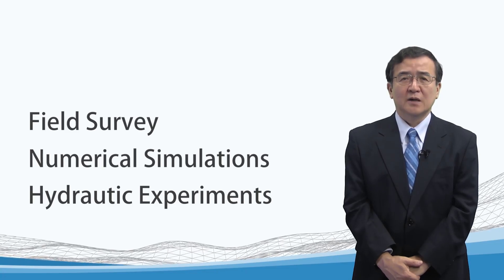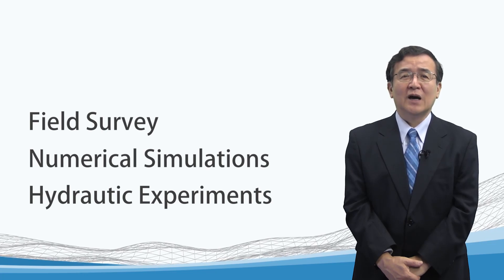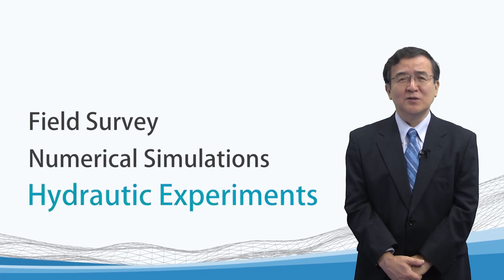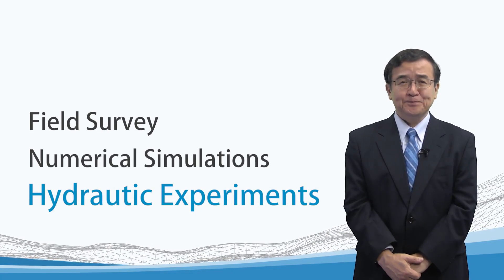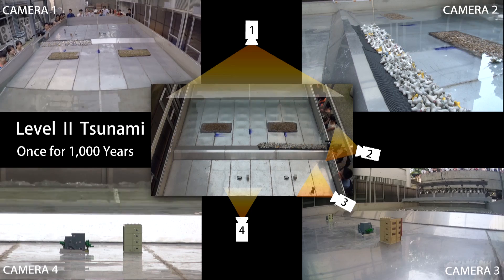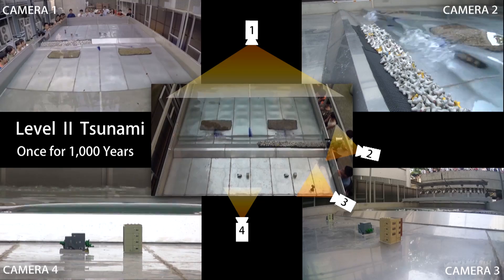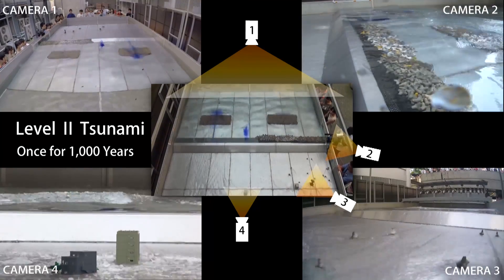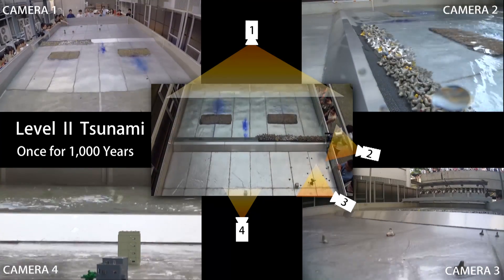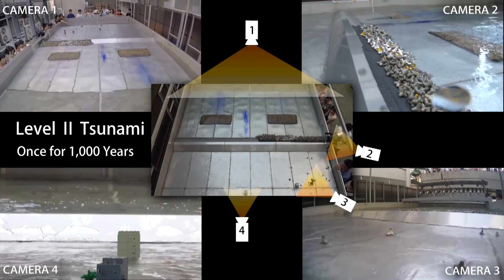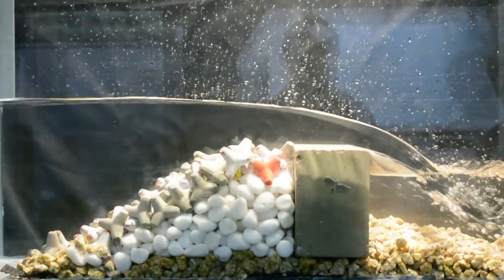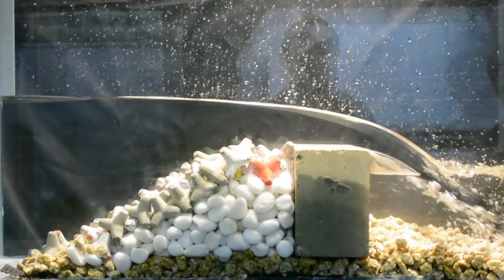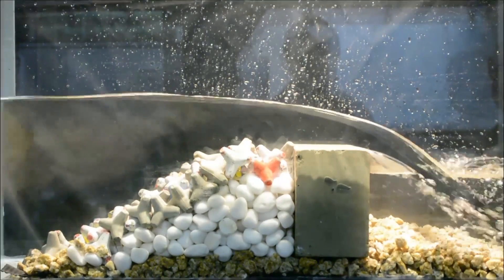The third one is hydraulic laboratory experiments. This is a wave basin experiment for tsunami flow over a coastal dike, and a wave flume experiment for the velocity field of flooded water.